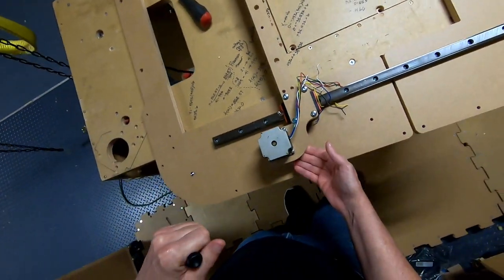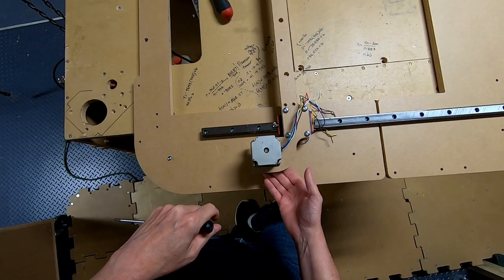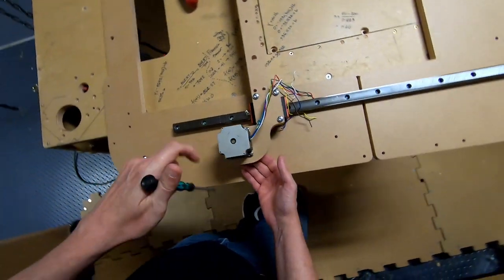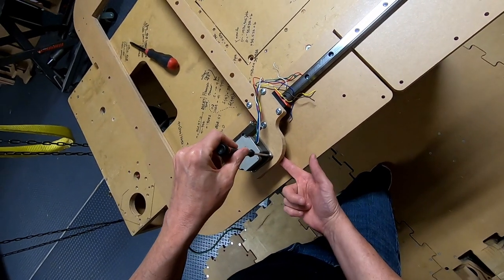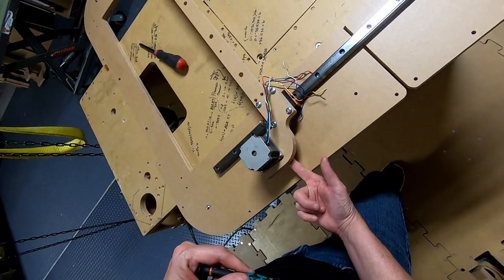And you can go ahead and tighten this down. If the rivet nuts you get are a little bit larger that it will barely fit inside the hole, you can use a longer number eight screw and grab the nut and just screw that down until the nut goes into the hole.